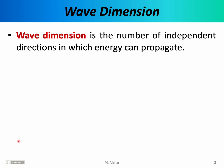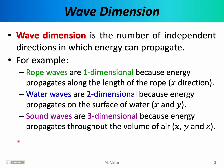If you're talking about a rope wave, there's really only one place that energy can go. It can only go from one end of the rope where the source is located to the other end of the rope. If the energy can travel only along one direction, then we refer to the wave as one dimensional. Rope waves are one dimensional because energy propagates only along the length of the rope — we usually call that the x direction.